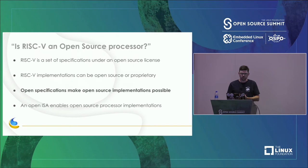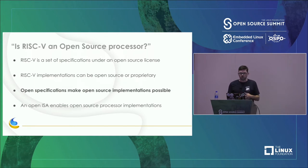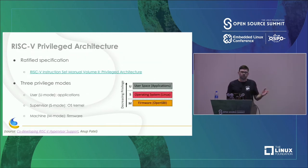People sometimes ask if RISC-V is an open source processor. But RISC-V itself is just a set of specifications under an open source license — the implementations can be either open source or proprietary. The key thing is that open specifications make open source implementations possible. There are a few notable ones: Rocket out of Berkeley is popular, and some cores out of ETH Zurich have been adopted by the OpenHW Group.